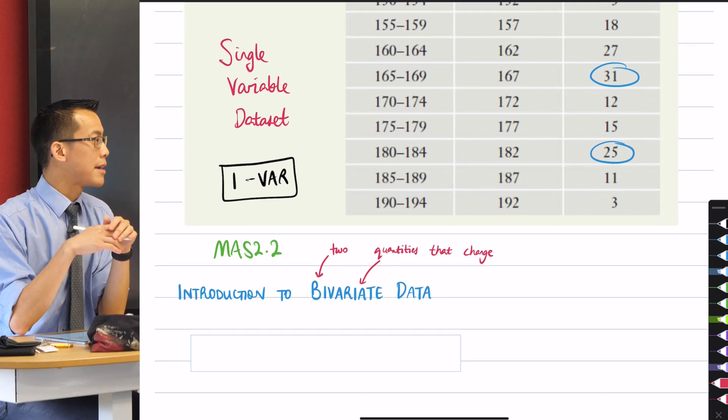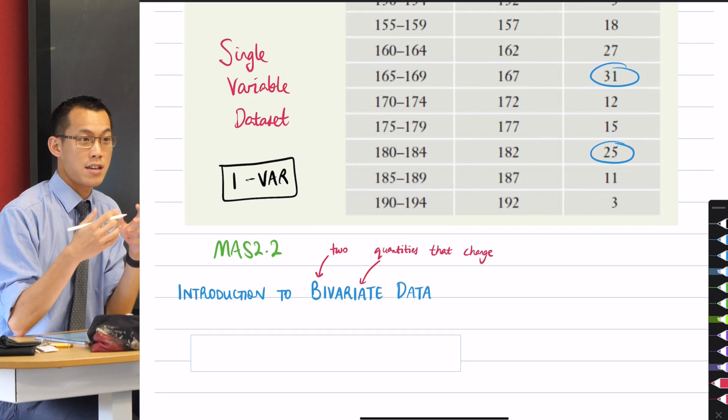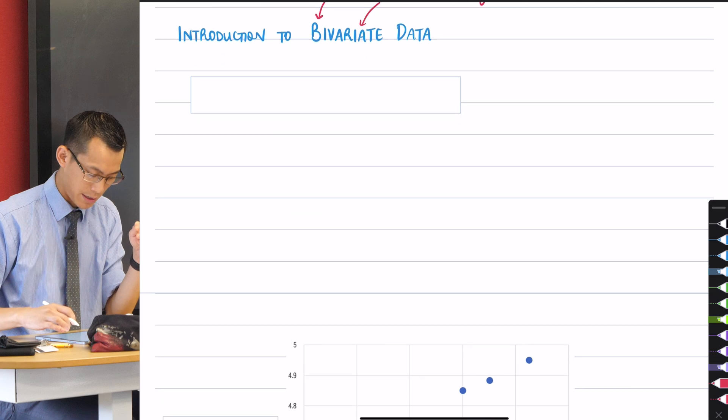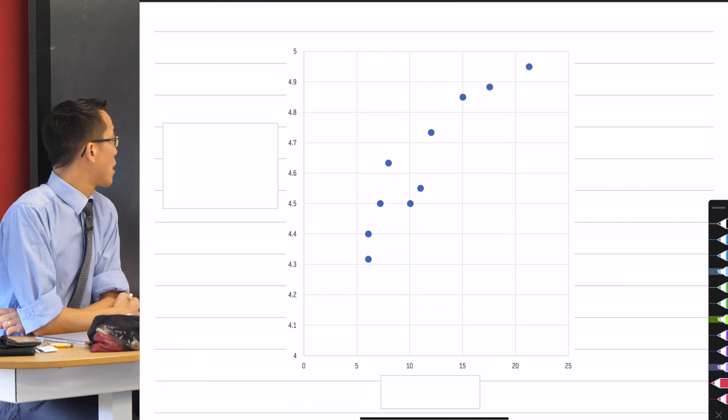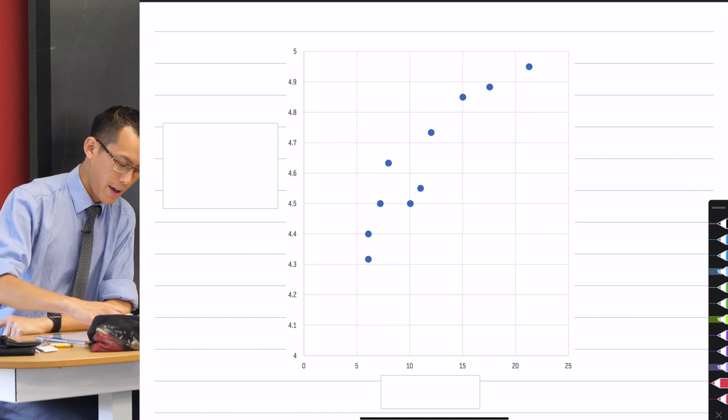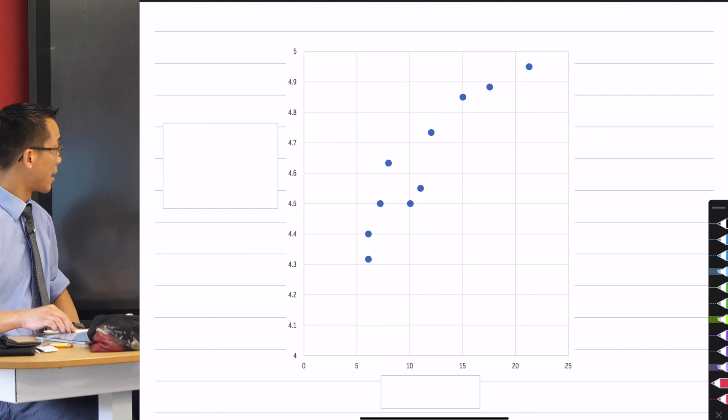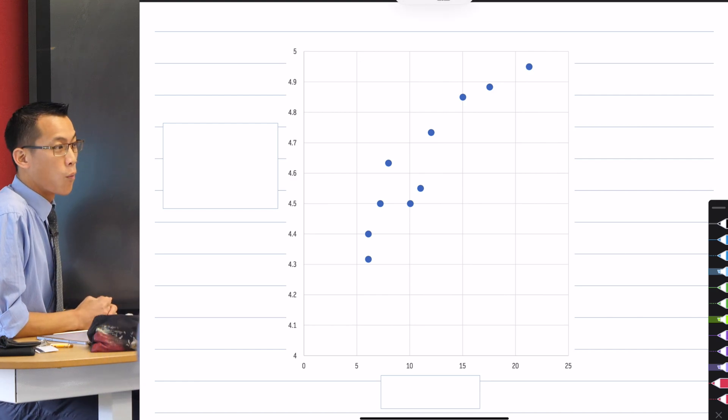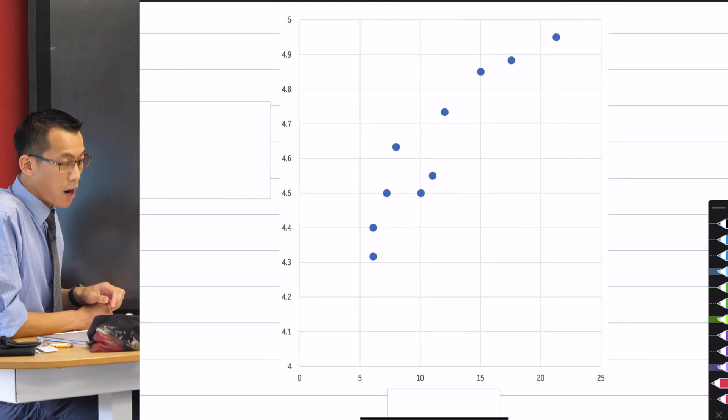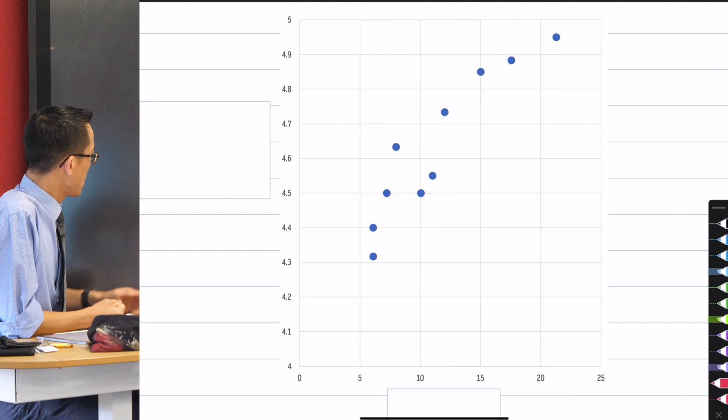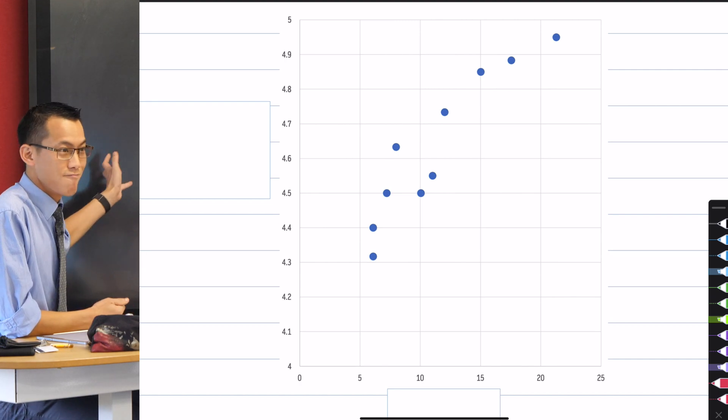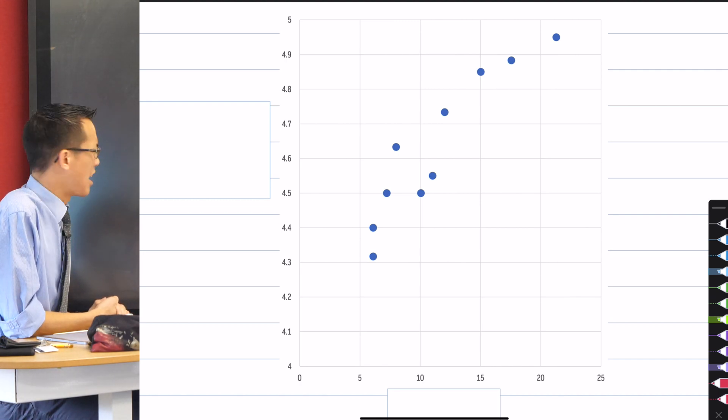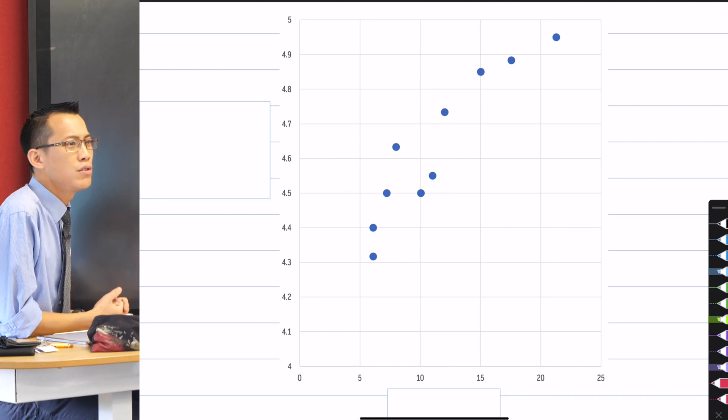So the way to make sense of this is to have a think about some actual data, and we're going to do this all together. And I thought what I would do is bring out a bit of personal data for you. This is a personal piece of Bivariate Data that I plotted this morning. And before we talk about what it is, I just want you to take note of what's not there.